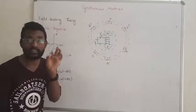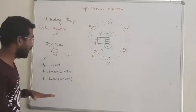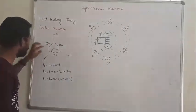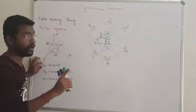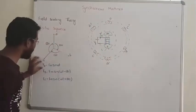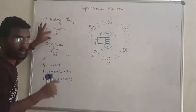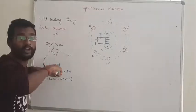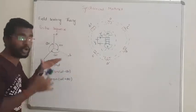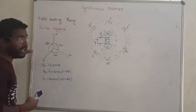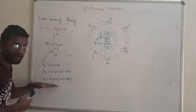First we are going to discuss about positive sequence. We have three phases with 120-degree phase difference. The MMF (magnetomotive force) developed by phase A is written as Fm·sin(ωt). For phase B it is Fm·sin(ωt − 120°). In phase A, after 120 degrees, phase B comes into the picture and develops the same magnetic field. Similarly, phase C develops the same magnetic field with a further 120-degree lag.